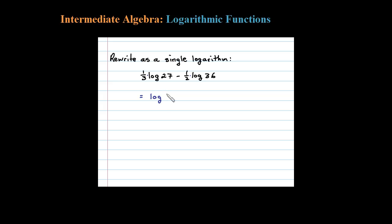So this would be equivalent to log of 27 to the 1/3 power minus log of 36 to the 1/2 power. Okay, now we know the 1/3 power is really the cubed root and 27 is a perfect cube.